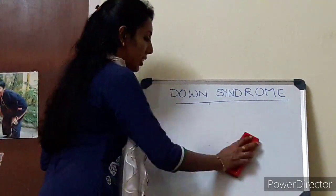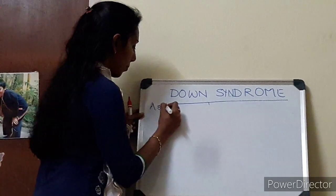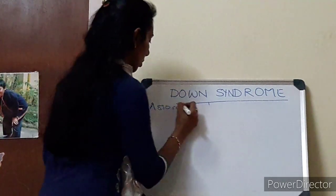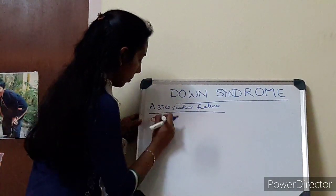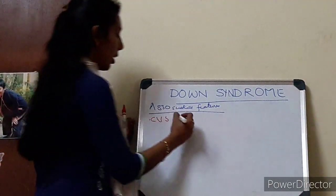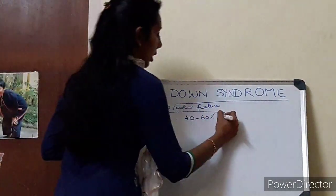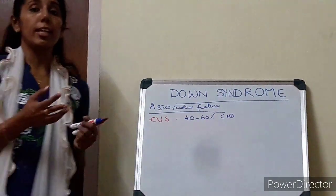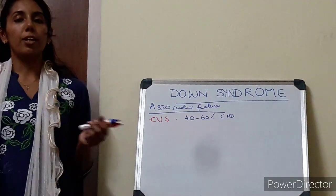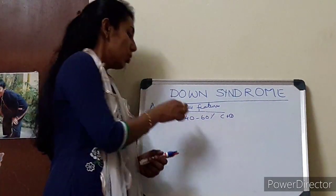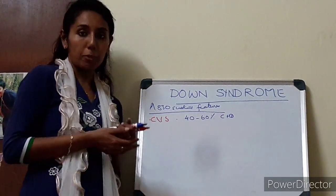Now let us see the associated features seen in Down syndrome. First is CVS. Down syndrome children — around 40 to 60% — tend to have congenital heart diseases. The congenital heart diseases are mostly endocardial cushion defects, also secundum ASDs, VSDs, TOF, pulmonary artery hypertension, and patent ductus arteriosus. So every child with Down syndrome, we have to have a cardiac evaluation including an echo, at least before nine months of age.